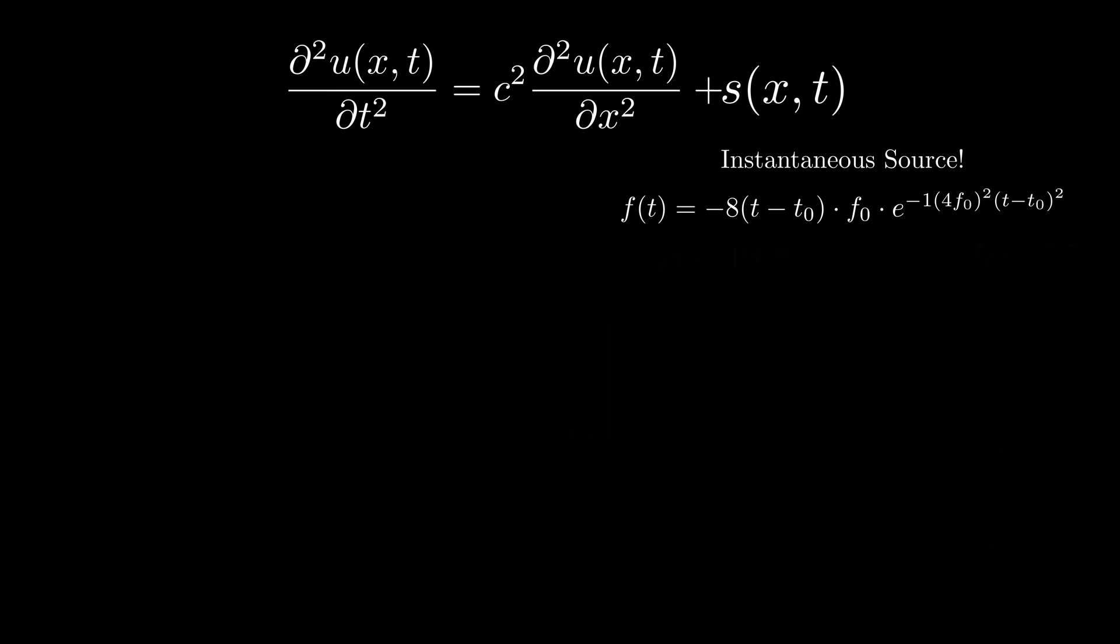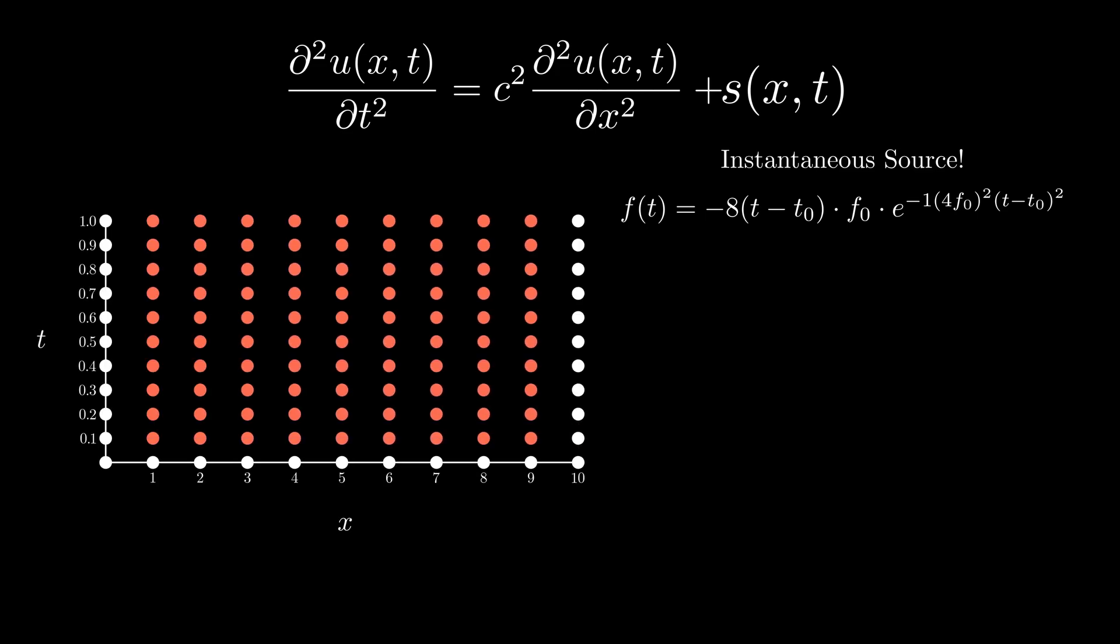Anyways, this takes care of the time domain, and I want something similar in the spatial domain as well, where the energy released has to be localized. To do this, I want to draw your attention to the domain discretization and call the distance between two points in x direction as dx. Ideally, I would like a delta function, but this behavior can be approximated using a boxcar function like this.